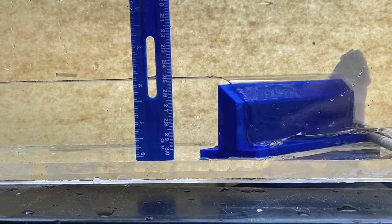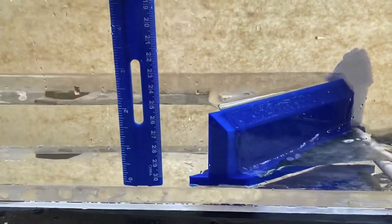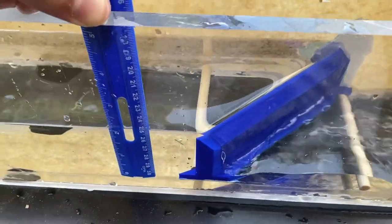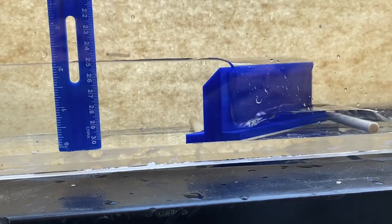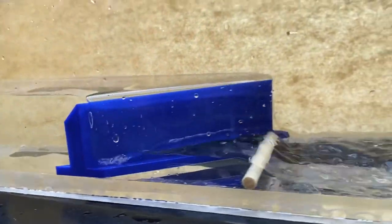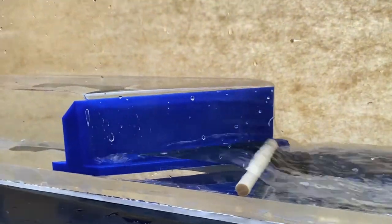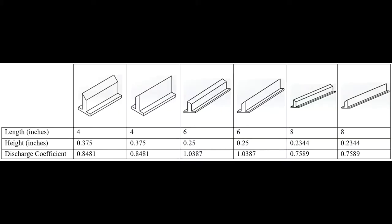We also performed analysis of a 6-inch medium-length weir, but errors in 3D printing allowed water to seep underneath and along the edges. This meant that the total flow was not entirely over the top of the weir, leading to a lower measured height than predicted. Since the height was lower, the discharge coefficient was greater than 1, which is impossible.